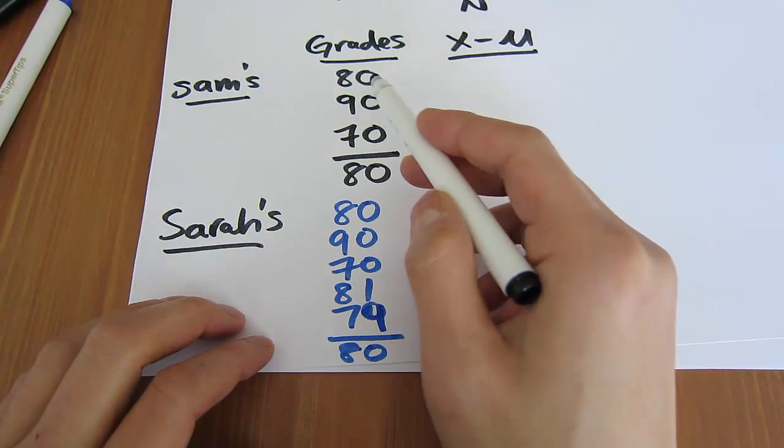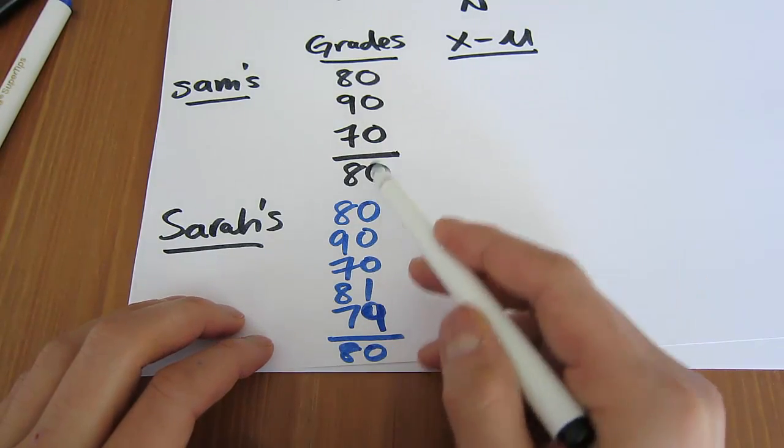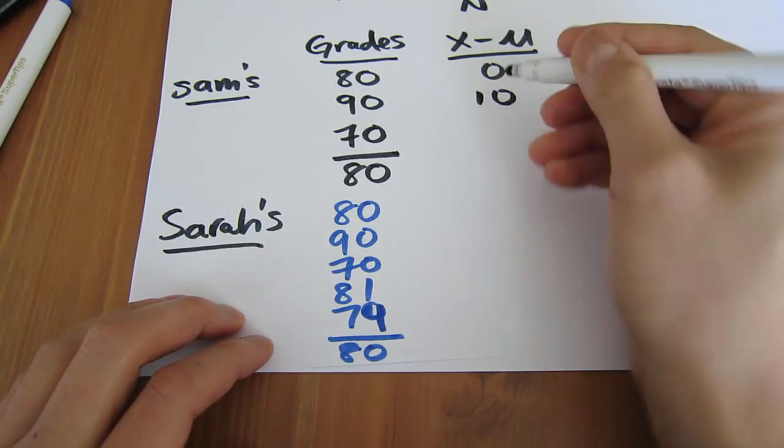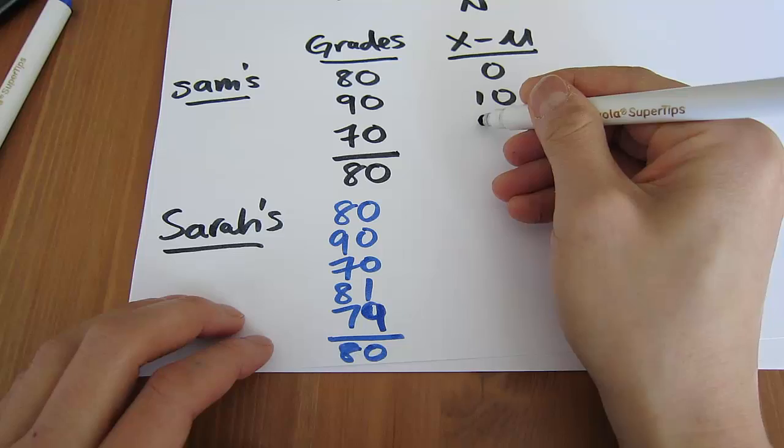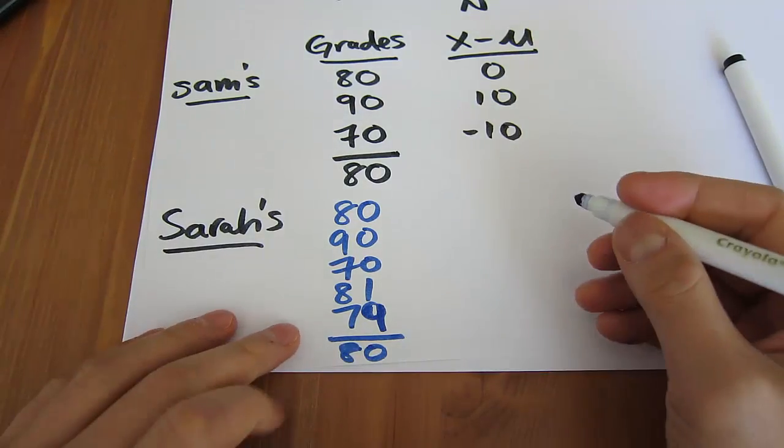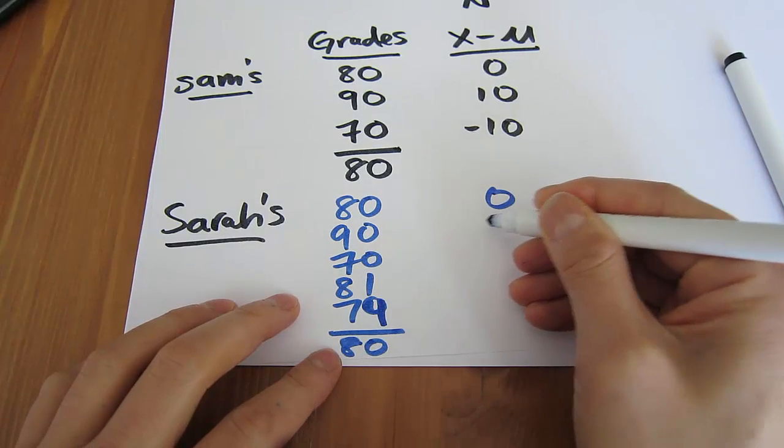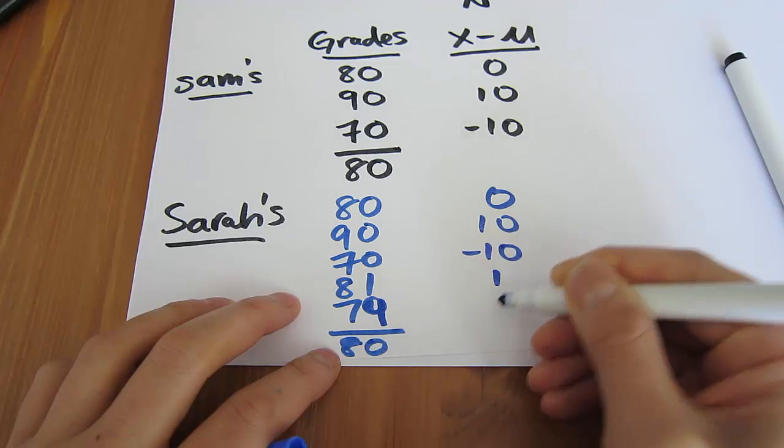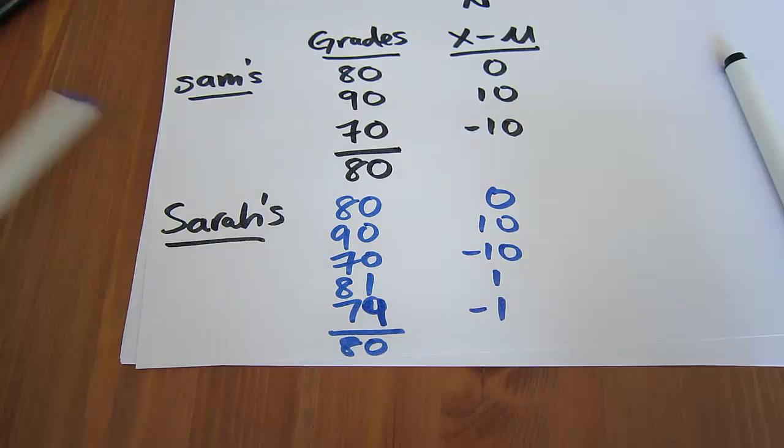So what we're going to do here is, I'm going to say, 80 minus the mean equals 0, 90 minus the mean gives me 10, 70 minus the mean gives me negative 10. And I'm going to do the same for Sarah as well. So 80 minus the mean gives me 0, 90 minus the mean gives me 10, negative 10, 1, and negative 1. Great.